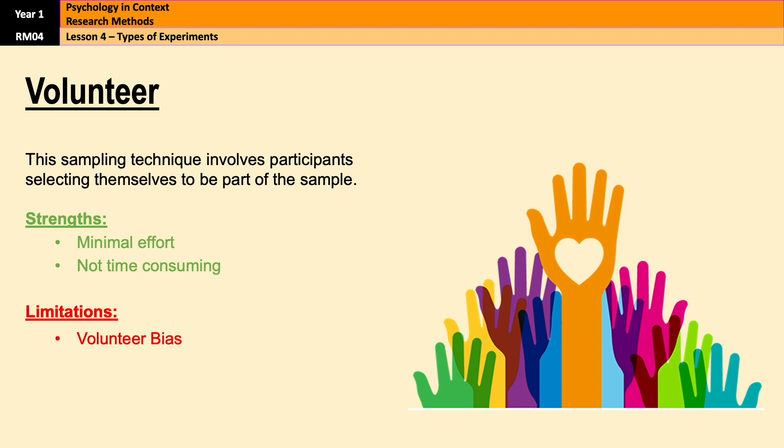However, a limitation is that it often results in a particular type of bias called volunteer bias, which means that people who volunteer may have different characteristics from the general population. For example, they might be more motivated, have an interest in the research, already know something about it, or simply have more free time — all of which will ultimately affect the results because those characteristics won't necessarily be representative of the population.